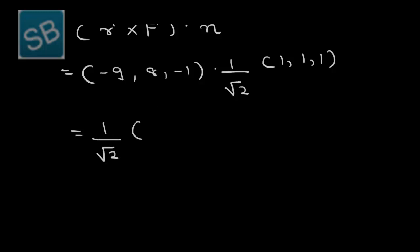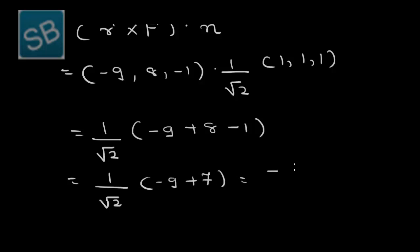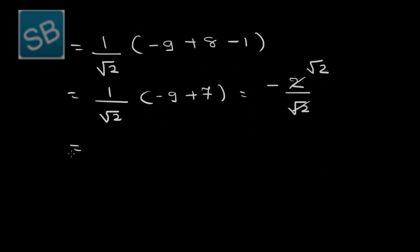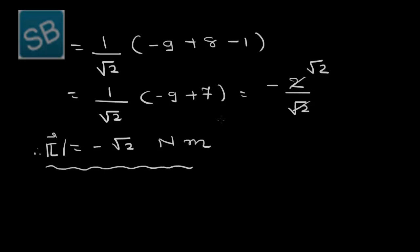The unit vector is (1/√2)(1, 1, 1), so the projection is (1/√2)(−9 + 8 − 1) = (1/√2)(−2) = −2/√2 = −√2. Therefore the magnitude of torque is √2 Newton metres. This completes the example on finding the magnitude and direction of torque.